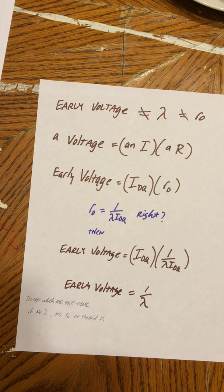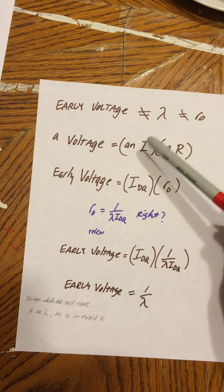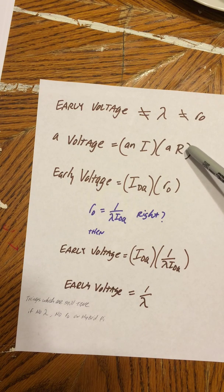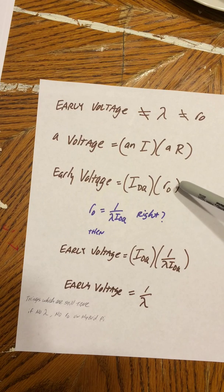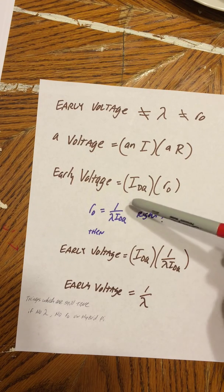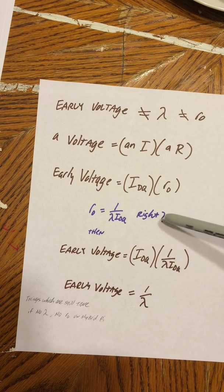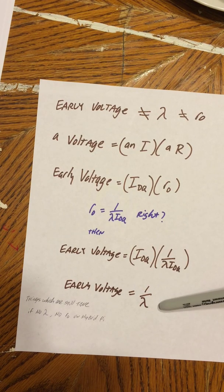But V equals IR, so a voltage equals a current times a resistance. Well then, let I be IDQ and let this resistance be the early onset resistance which is equal to 1 over lambda IDQ, right? Well then, early voltage is the inverse of the short channel conduction parameter.